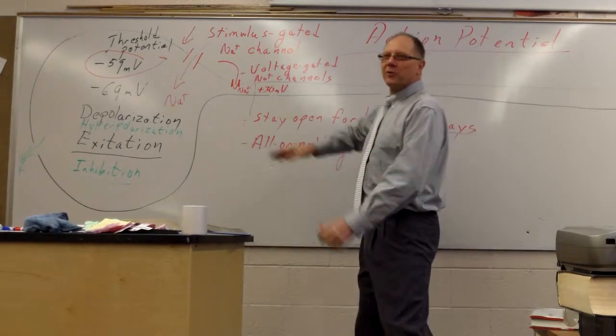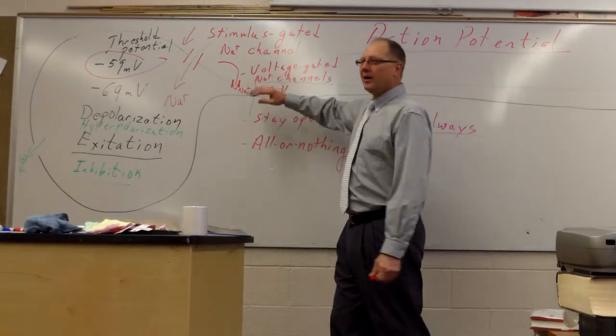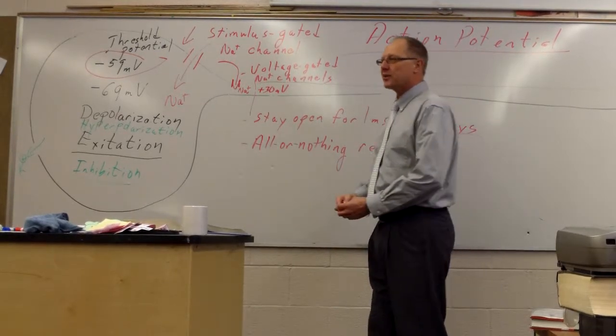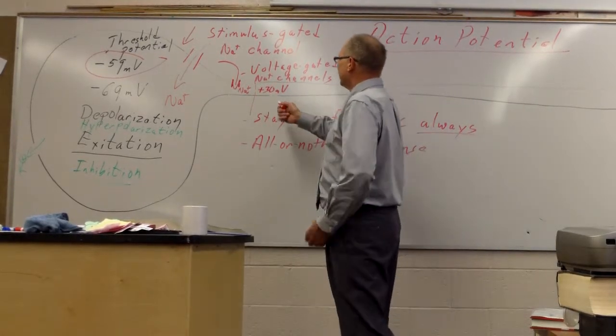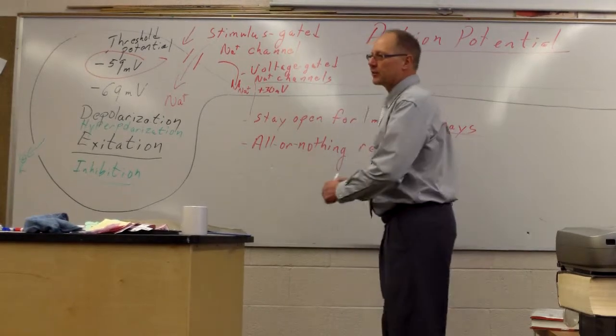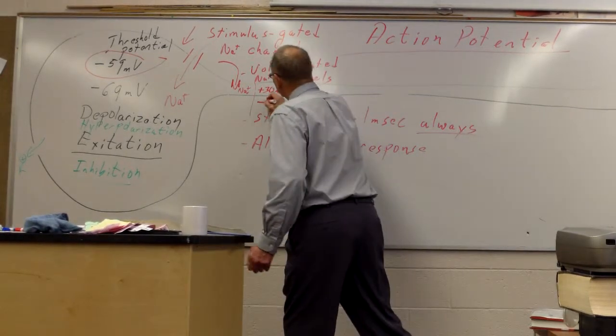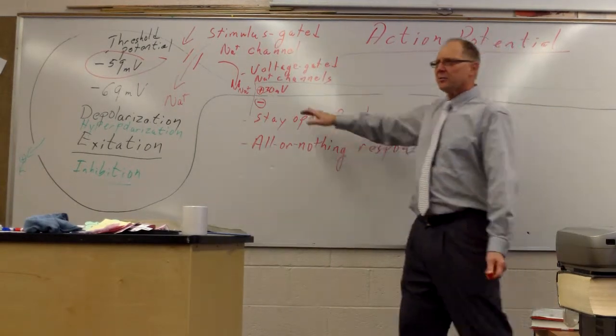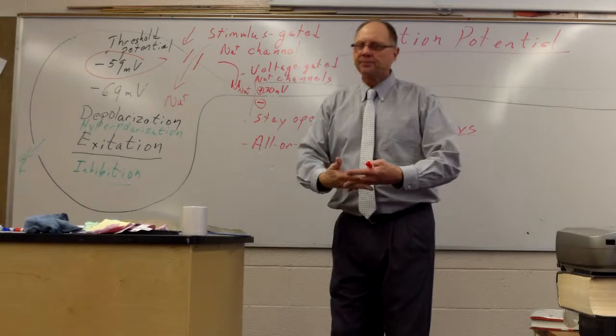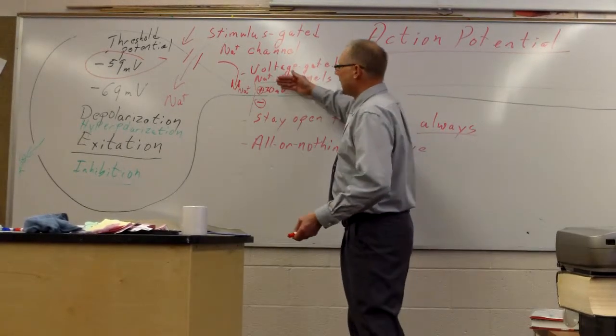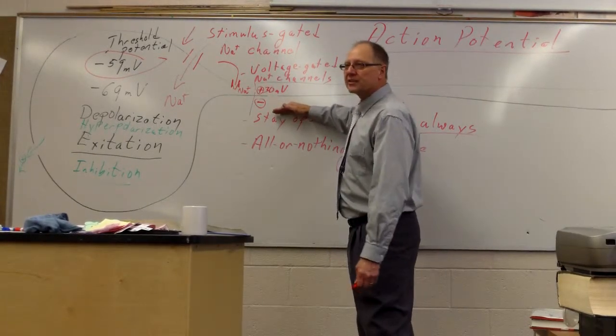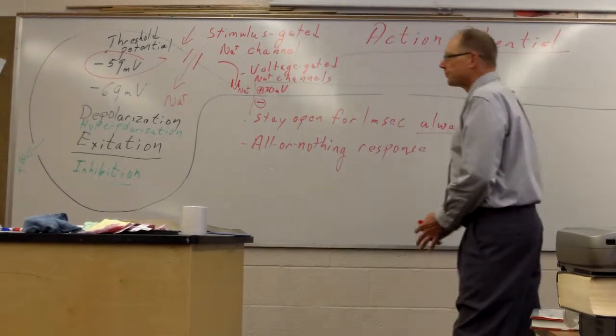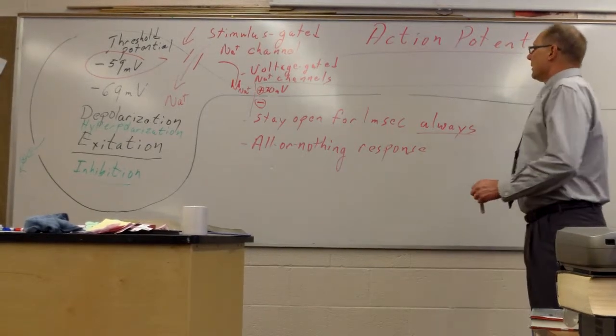So we have flipped our polarity. We now have gone to plus 30. So the inside of the membrane now is positively charged and the outside is negatively charged. And so we can put that, we have a plus charge here and a negative charge there. And negative doesn't mean that negative ions rushed out. It just means that relative to the inside, now the outside is negative. Or less positive, if that helps you to think that way.